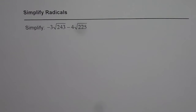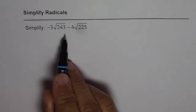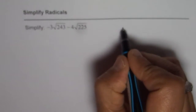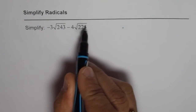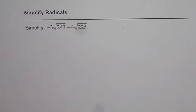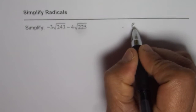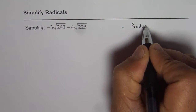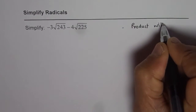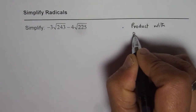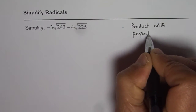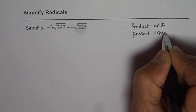I'm Anil Kumar and in this video we'll try to understand how to simplify radicals. The strategy to simplify radicals is to write the number within the radical sign as a perfect square — we'll try to write them as a product with at least one of them being a perfect square.